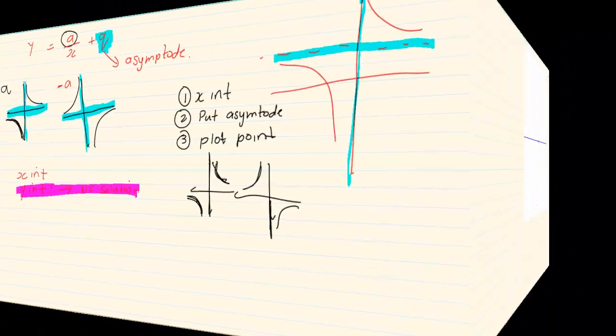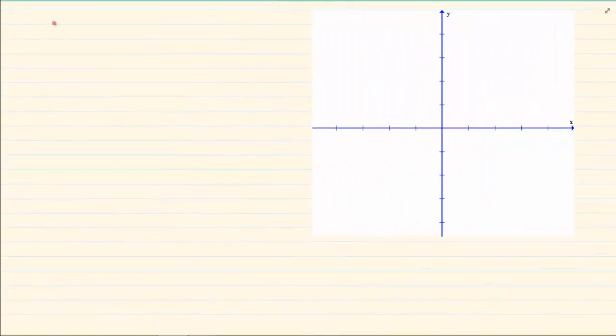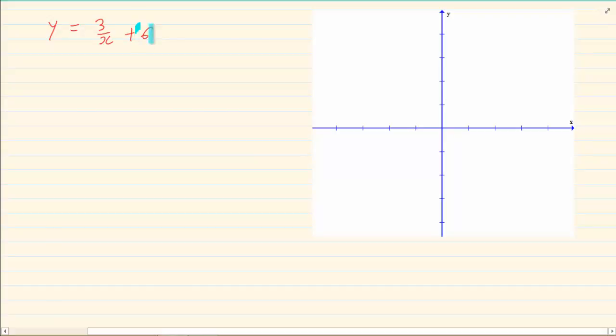Let us try an example. Let us draw the graph y equals 3 over x plus 6. Now you should already see that your asymptote is going to be 6. Now what does that mean? When you say your asymptote is 6, what does it mean? It means you're going to have a line that says y equals 6. That is a graph that you're going to draw.